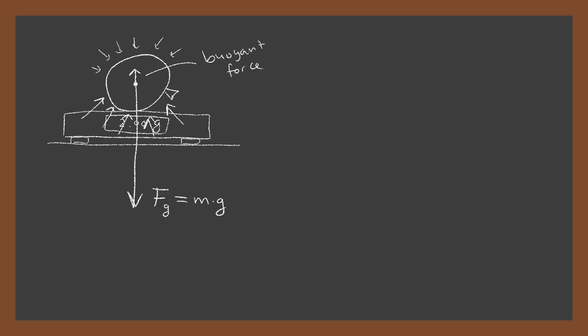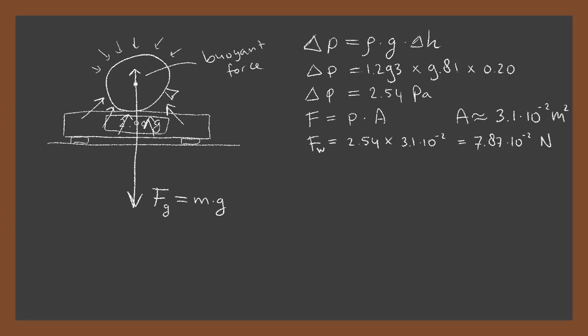We can actually calculate this difference in buoyant force with some rough estimates. The change in pressure equals the density of the air times the acceleration due to gravity times the change in height. For small changes in height, the density of the air can be taken to be constant. The balloon has a diameter of about 20 centimeters. If we fill everything in, the difference in pressure turns out to be 2.54 Pa. This results in a force of F equals P times A, with a surface area of about 3.1 times 10 to the power of minus 2 meters squared. So for the warm balloon, the buoyant force is 7.87 times 10 to the power of minus 2 Newtons.